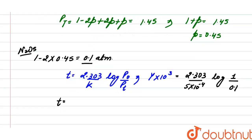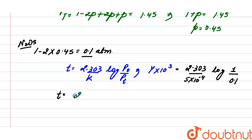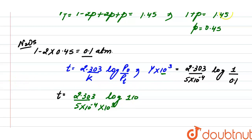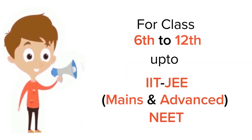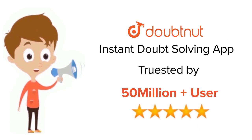After solving, it is 2.303 divided by 5 into 10 raised to the power minus 4. The 10 raised to the power 3 comes here, and log of 10 divided by 10 raised to the power 3. Since log of 10 equals 1, from here the value of y is 4.6. For class 6 to 12, IIT-JEE and NEET level, trusted by more than 5 crore students — download DoubtNet app today.